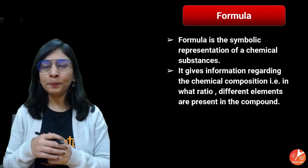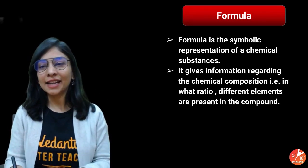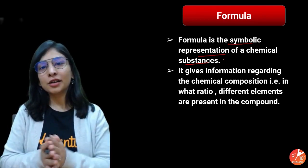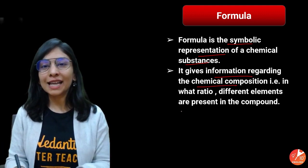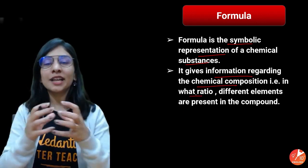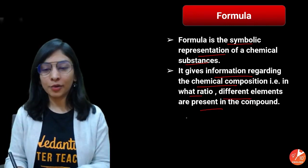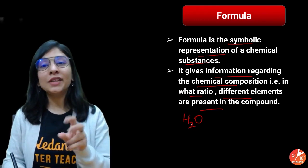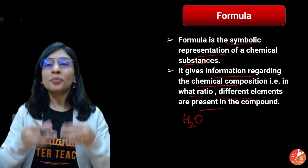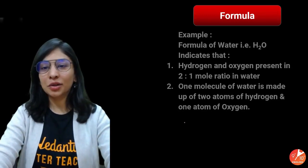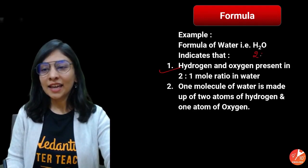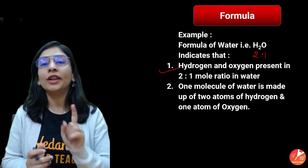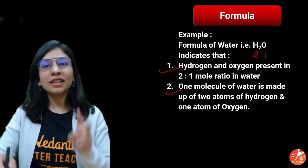Let's talk about what exactly a formula is. From seventh class itself, it's a symbolic representation of a chemical substance — a symbolic representation of a group of atoms combined together to give a particular molecule. It gives information regarding the chemical composition: in what ratio elements are going to combine, and the different elements present in the compound. For example, water: a molecular formula tells you the number of elements involved, their ratio in the compound. In H₂O, the ratio between hydrogen and oxygen is 2:1. One molecule of water has 2 hydrogen atoms and 1 oxygen atom.